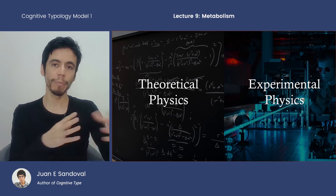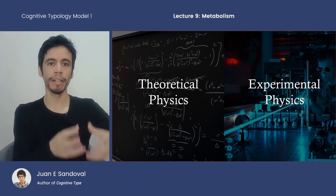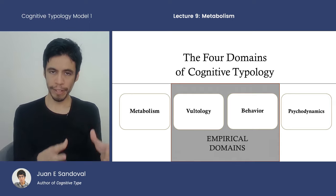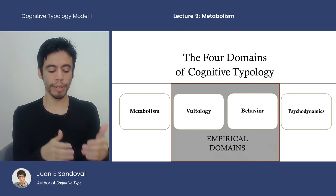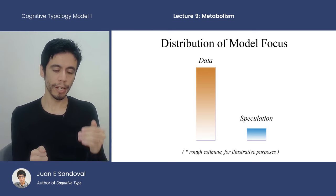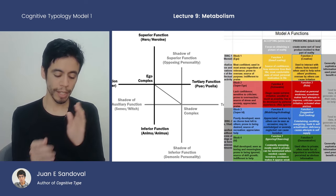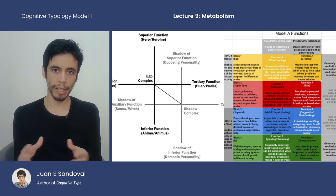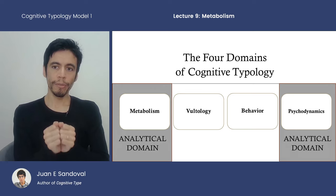The analytical domains are called analytical because, unlike the empirical domains which directly gather data, the analytical domains create theoretical models for understanding that data. This is very common in science — you have theoretical physics and applied physics. The empirical domains are very straightforward, which is why we're starting with them, because they don't speculate beyond themselves very much. Despite being so far into this series, there's been very little actual speculation, unlike other personality or Jungian systems which generate concepts not tied to anything.